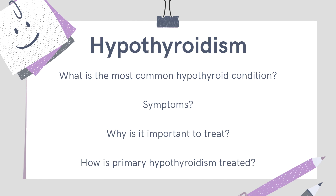The long-term consequences of hypothyroidism include heart disease, anemia, impaired digestion, menstrual irregularities, infertility, and even delayed puberty in children. Primary hypothyroidism can be managed in primary care through supplemental thyroid hormone replacement medications like levothyroxine, also known as Synthroid. Beyond primary hypothyroidism, a referral to endocrinology should be made.